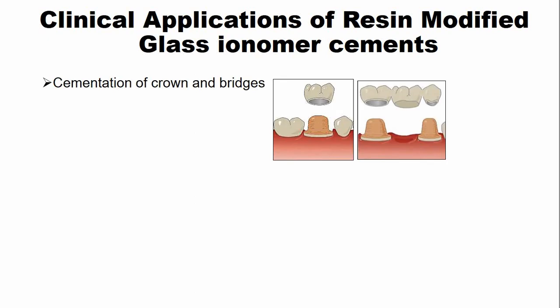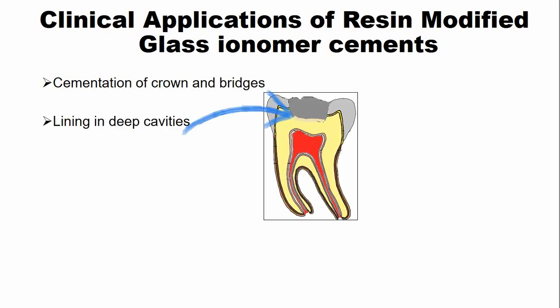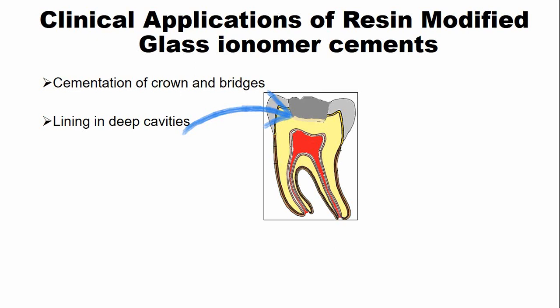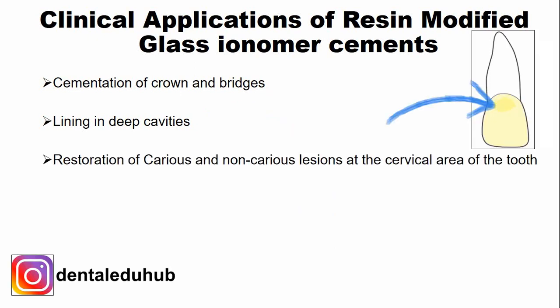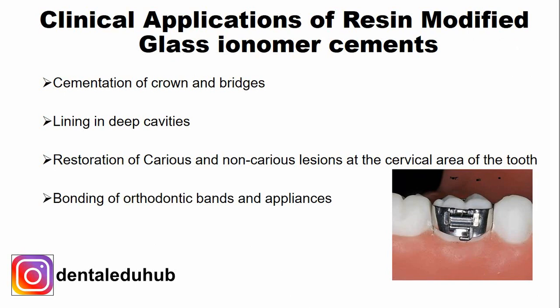The clinical applications of resin modified glass ionomer cements include: cementation of crowns and bridges; lining in deep cavities, for example below composite or amalgam restorations; restoration of carious and non-carious lesions at the cervical area of the tooth; and bonding of orthodontic bands and appliances.